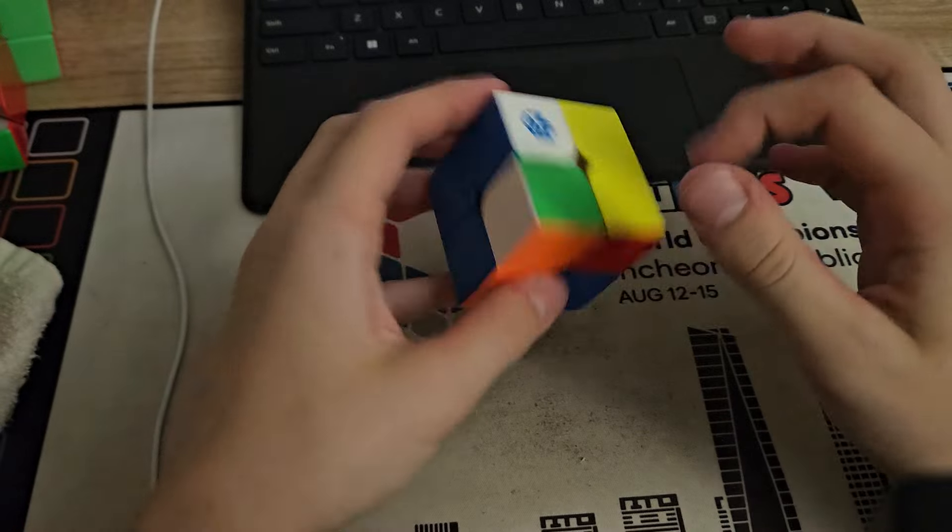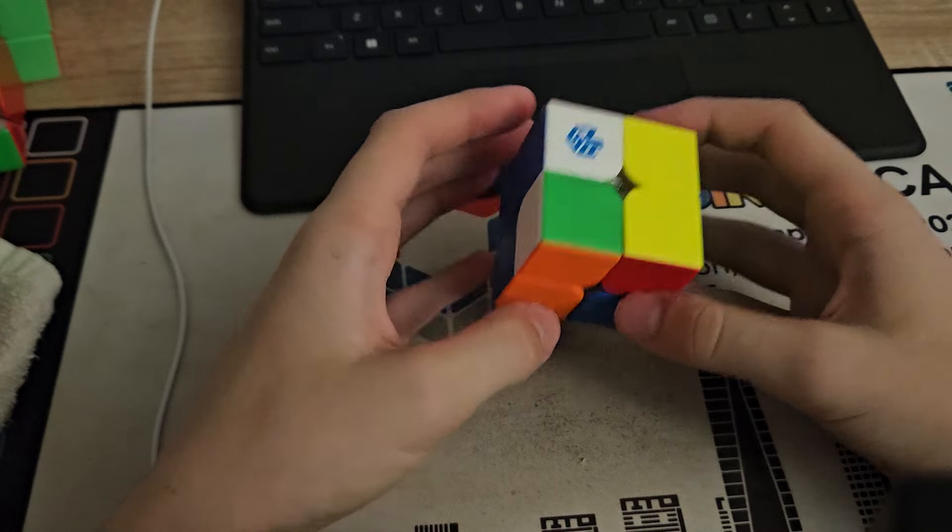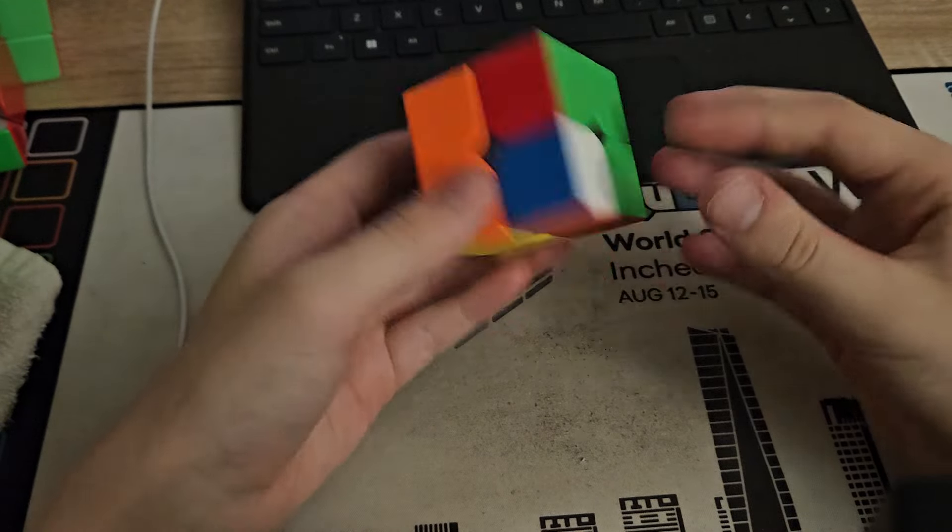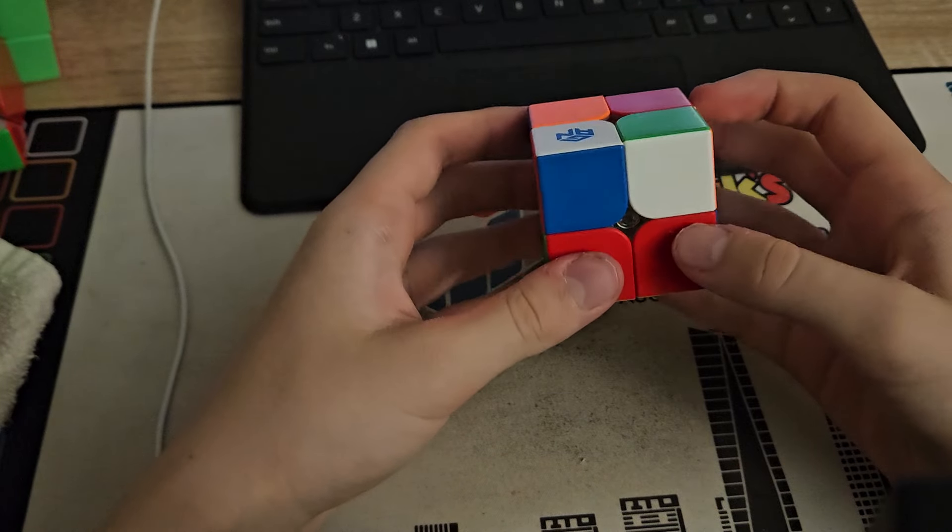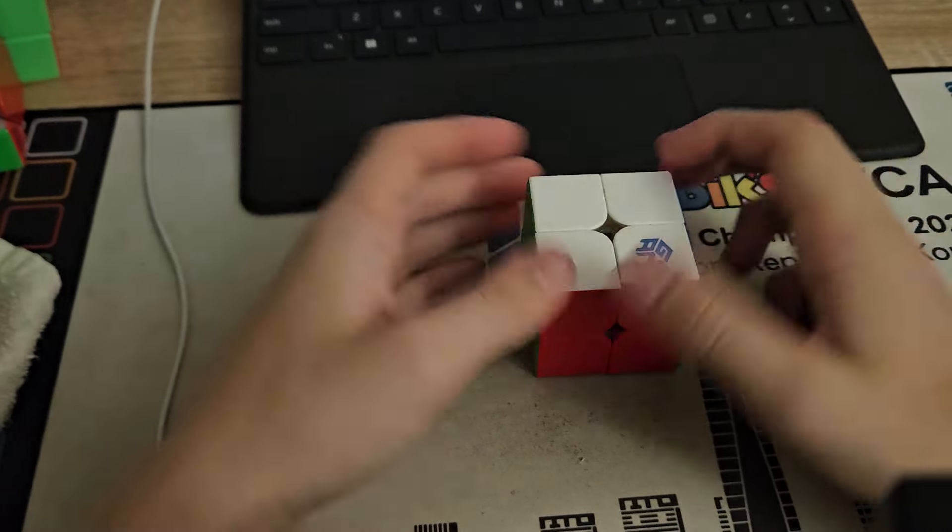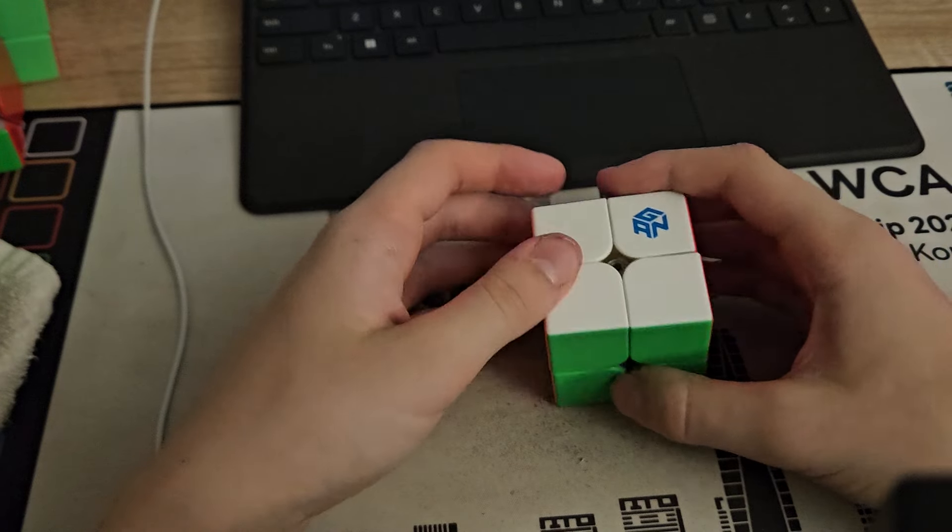And this is the last solve which locked it in, which has a 1-move layer. I looked at a pseudo-layer solution for a second, but I decided not to risk it and just go R2 into Niklas. So that was the best solve for the average, which locked in a 1.03 PB average.